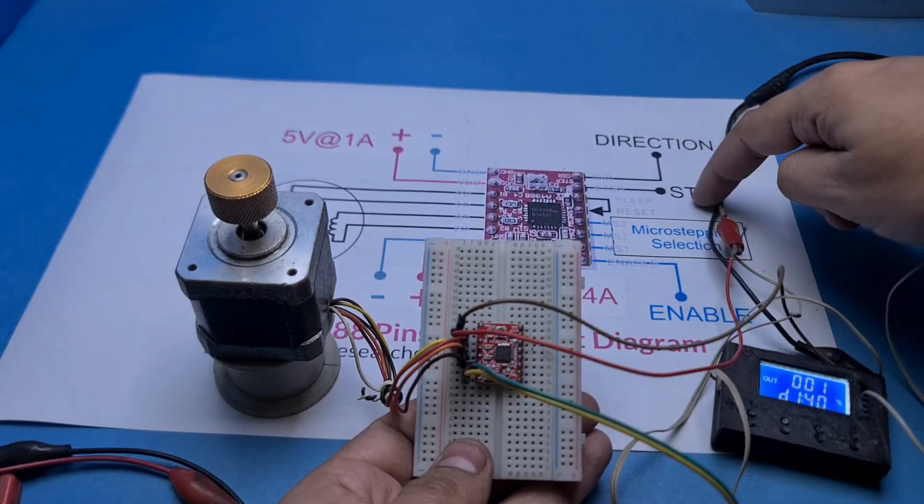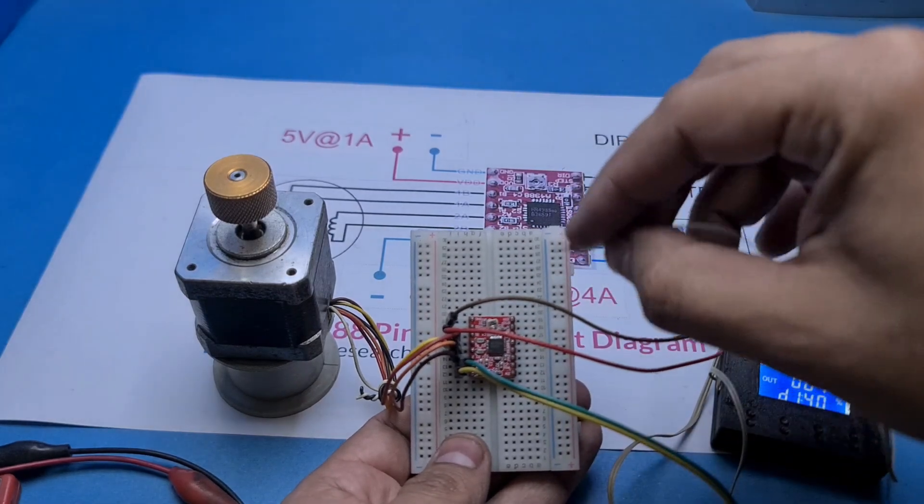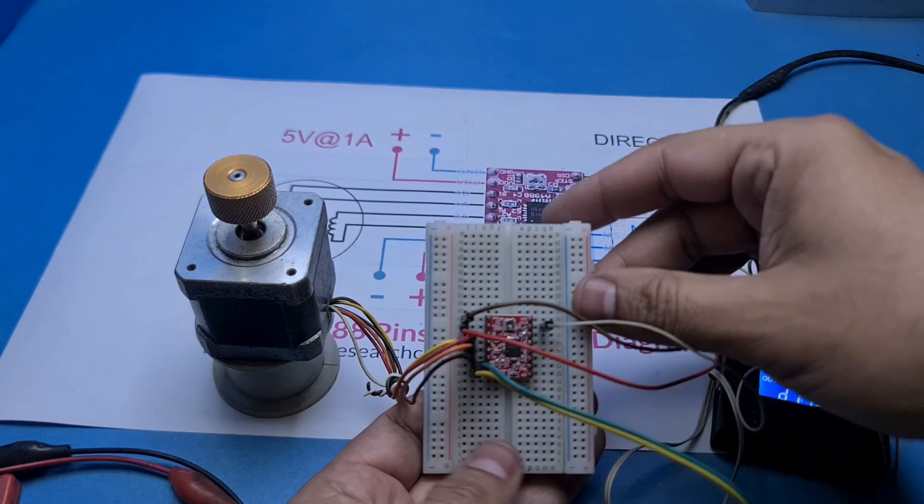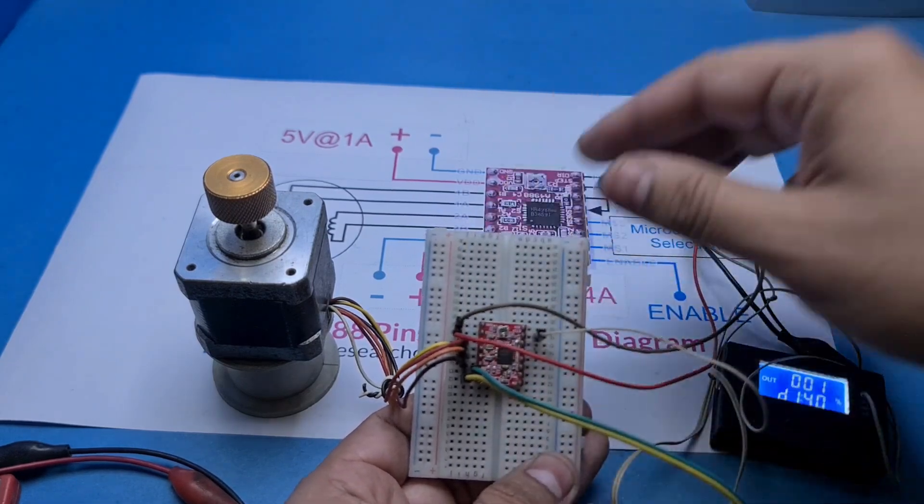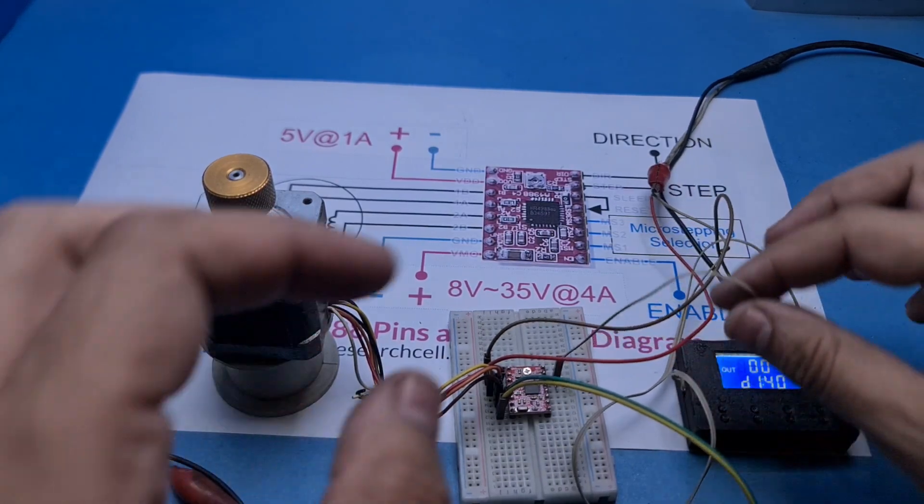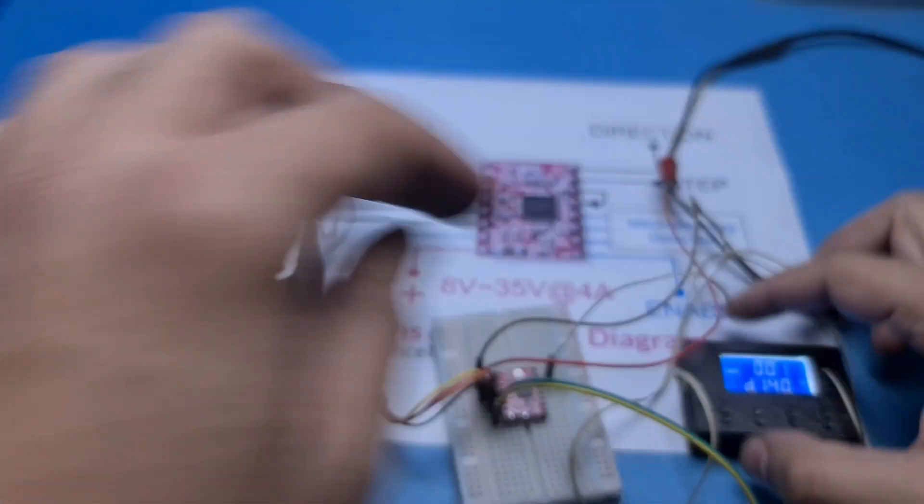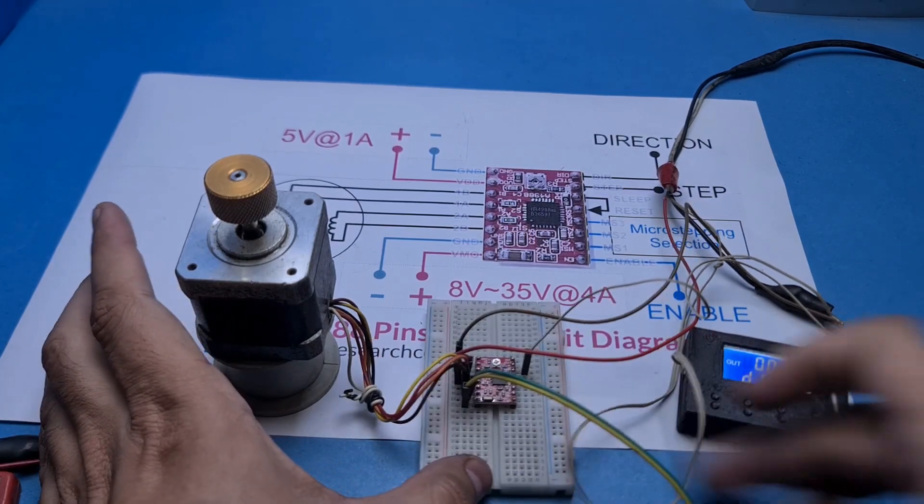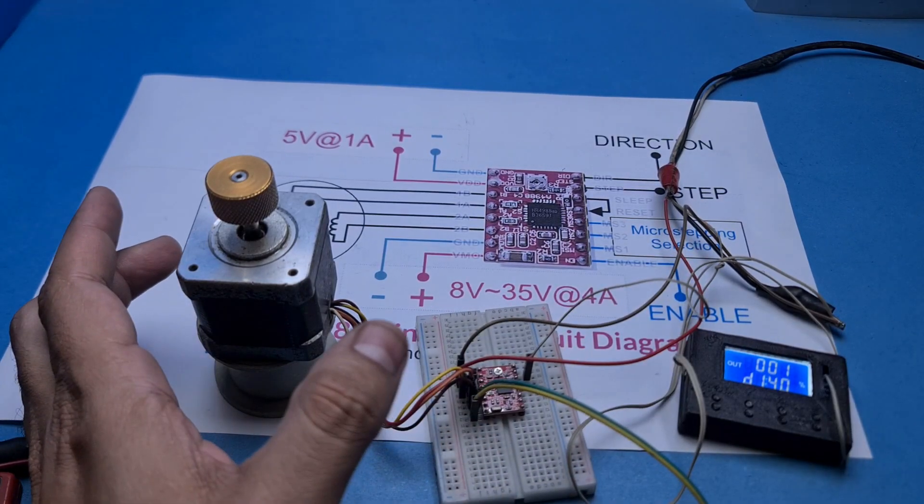Direction and step pins should not be left floating, so now I will connect the step pin with my PWM controller. This PWM generator will send 5 volt pulses to the step pin, and I can set the frequency of these pulses. Every time a plus 5 volt pulse arrives on the step pin, the driver will rotate the stepper motor one step in the direction set by the direction pin. That is how the microcontroller controls a stepper motor.